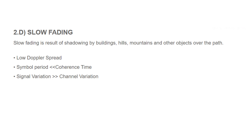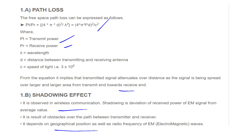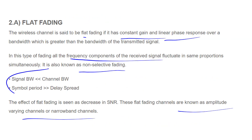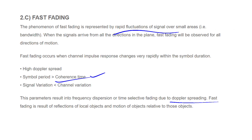Slow fading is the result of shadowing by buildings, hills, mountains, etc. The signal variation is greater than coherence time in slow fading. This is the result of slow fading by the Doppler spread — the different types of fading.